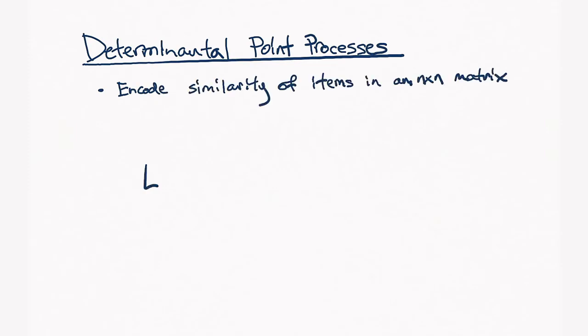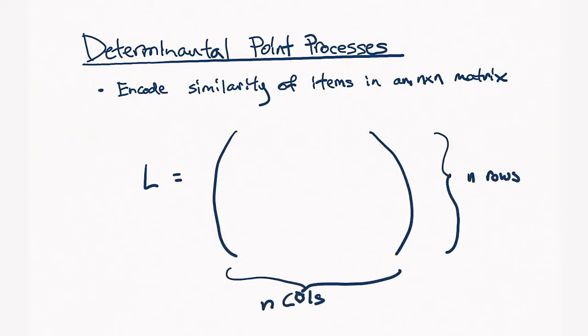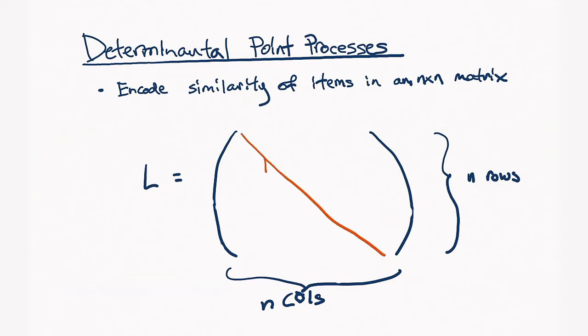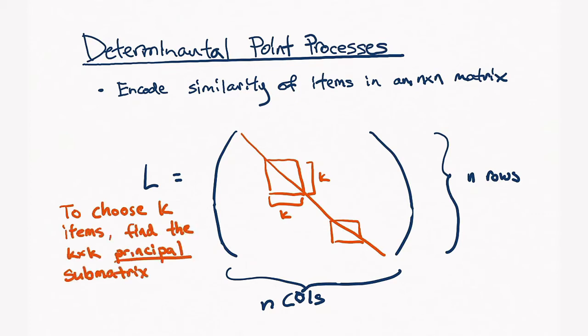And one definition that's gained a lot of traction recently is this definition of determinantal point processes. And it's really quite simple. Assuming you have N items that you're choosing from, you must also have some sort of notion of similarity between the items. So perhaps you could encode this similarity within an N by N similarity matrix. Then, given this matrix of N rows and N columns, the IJ entry is just the similarity of items I and J. So, for determinantal point processes, the claim is that if you want to pick K items, then all you have to do is find a K by K principal submatrix with the maximum determinant. And that's it.